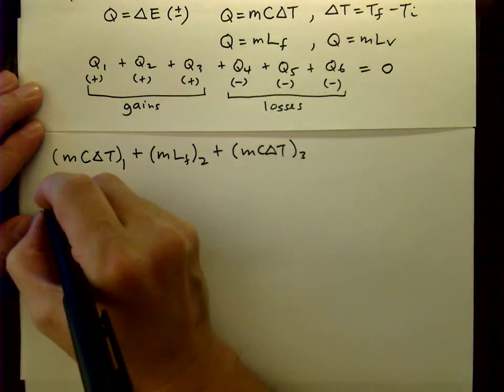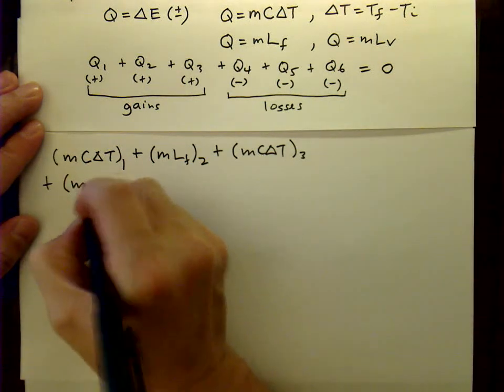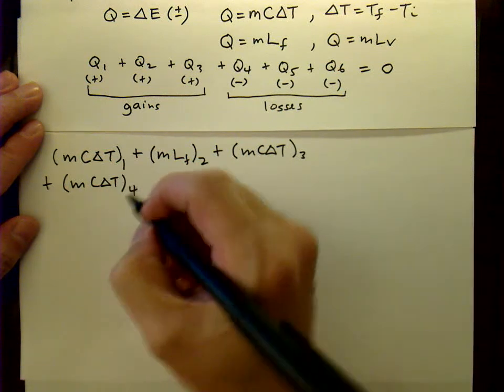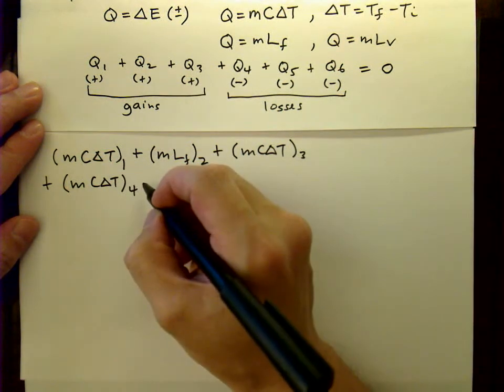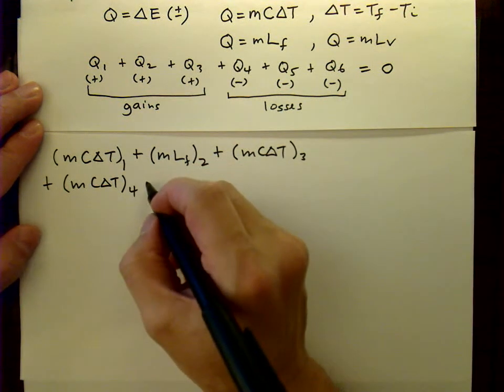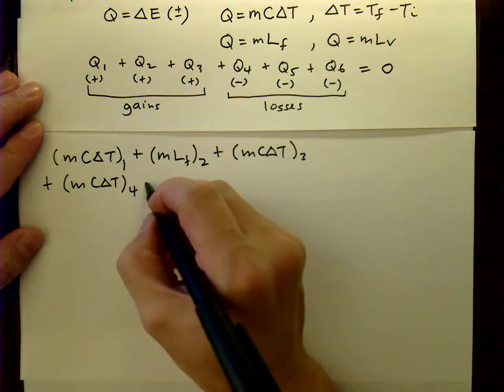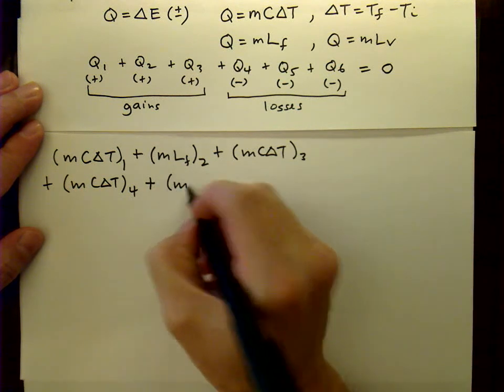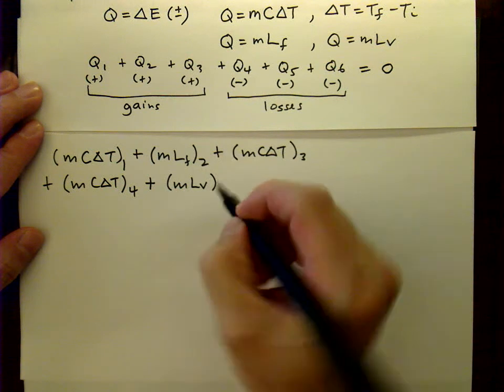On the steam side, we have MC delta T of the steam, dropping in temperature from 125 degrees Celsius to 100. And next, we have the latent heat associated with condensation, or vaporization.